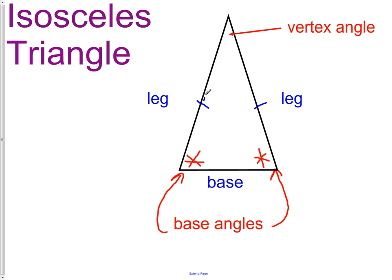If I trace the leg on the left side, follow that by tracing the leg on the right side, you'll notice I just made an angle at the top of this triangle. That is called the vertex angle.